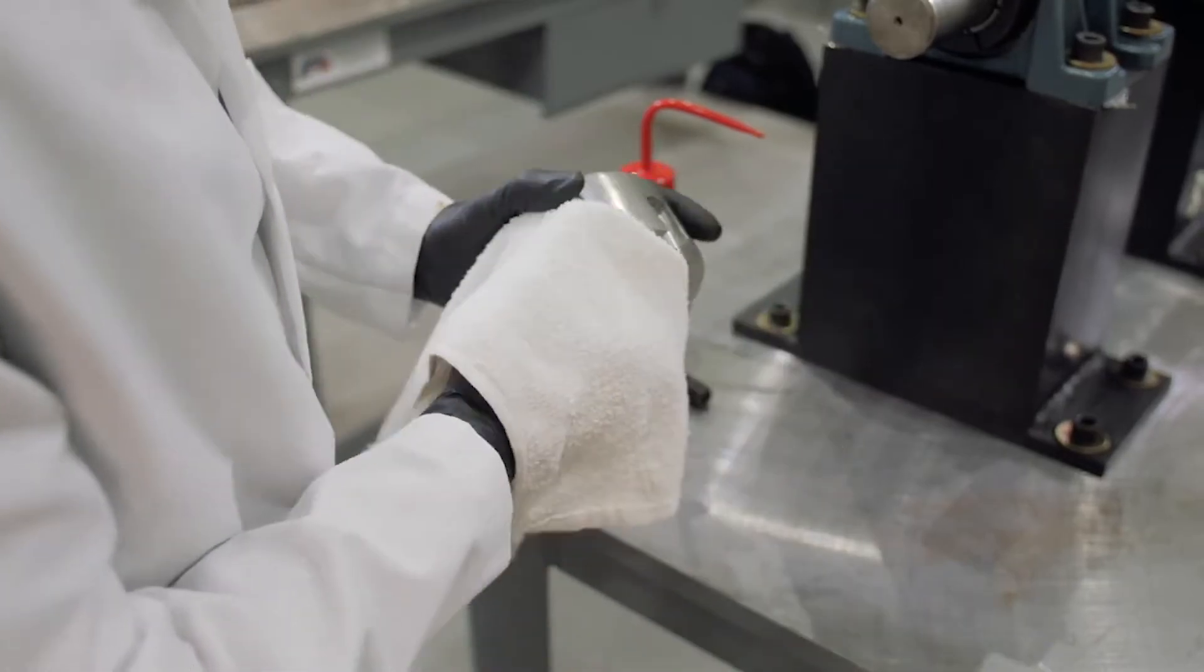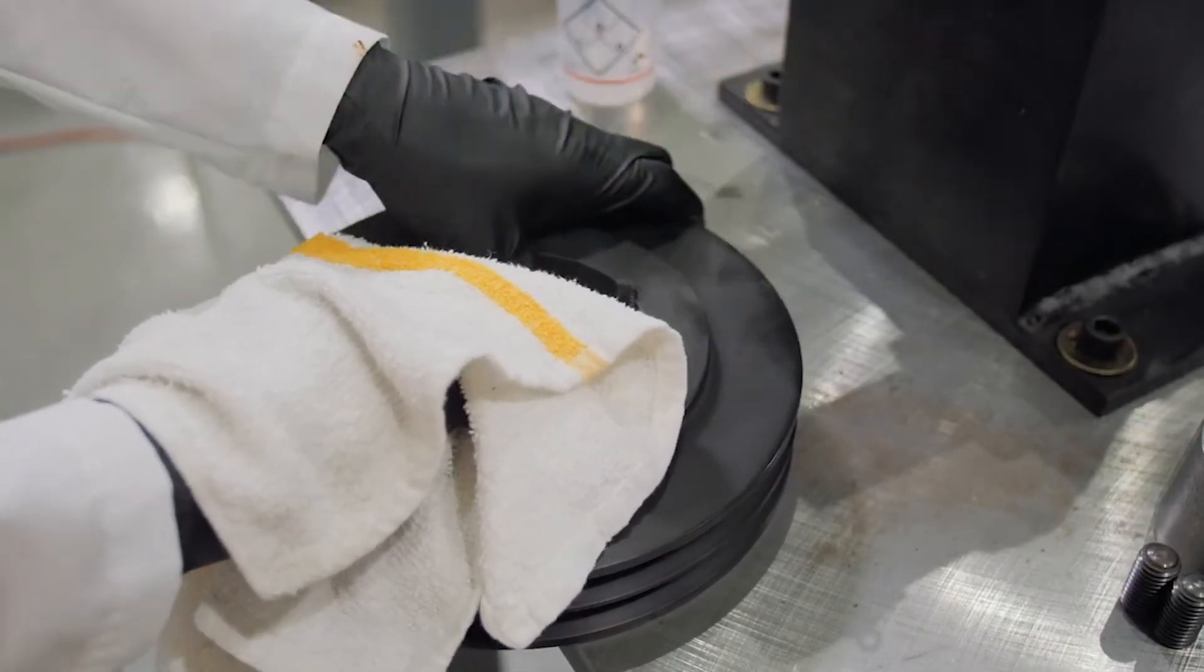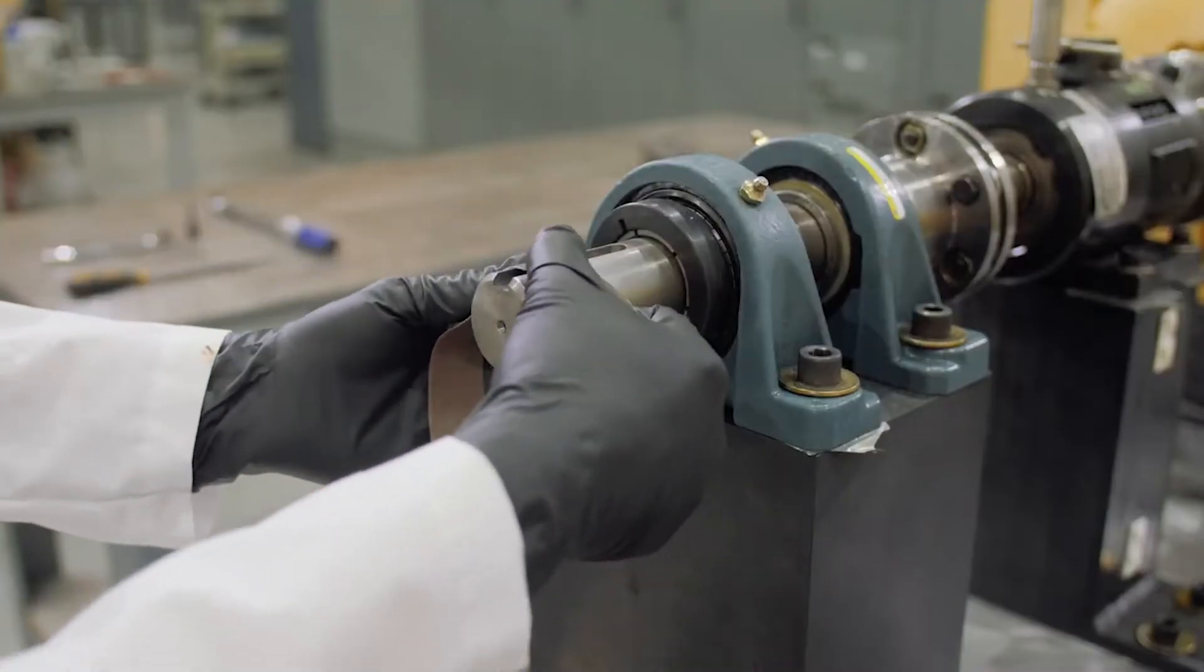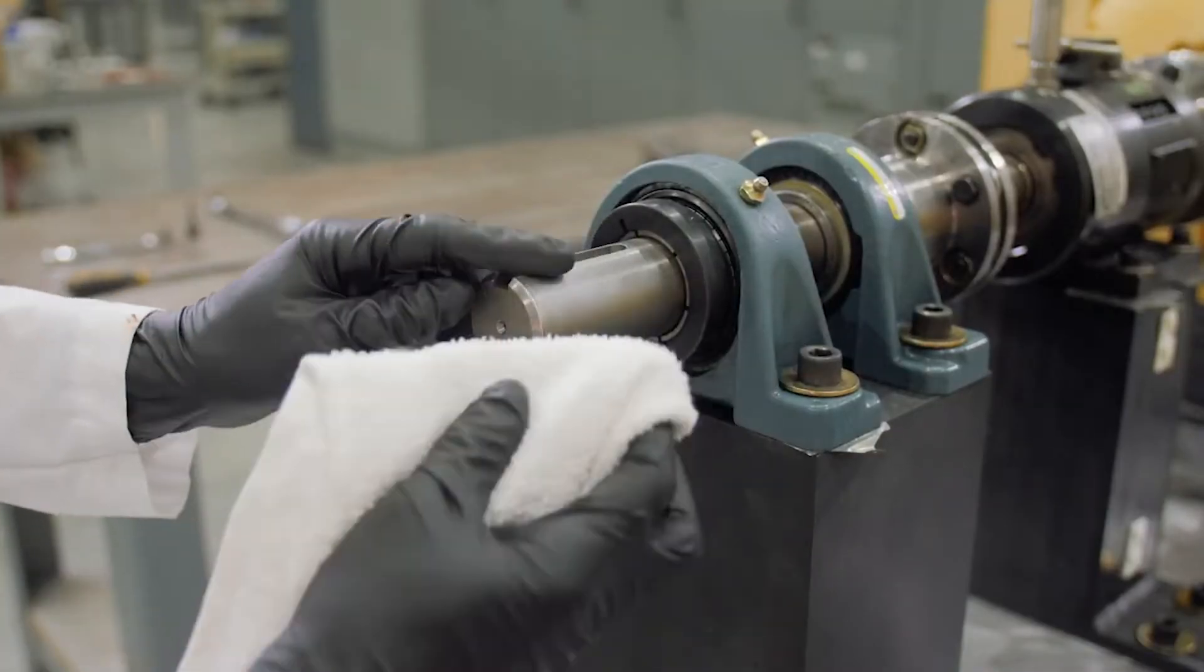Clean all components including the shaft, taper lock bushing, and hub. Remove any burrs on the shaft with a file or emery paper and clean with a cloth.